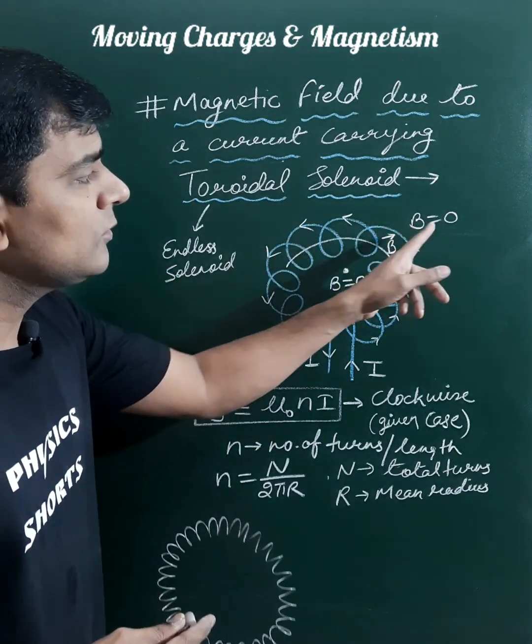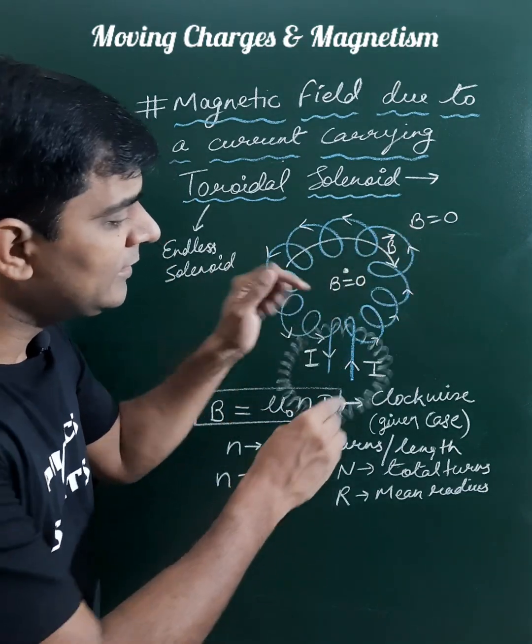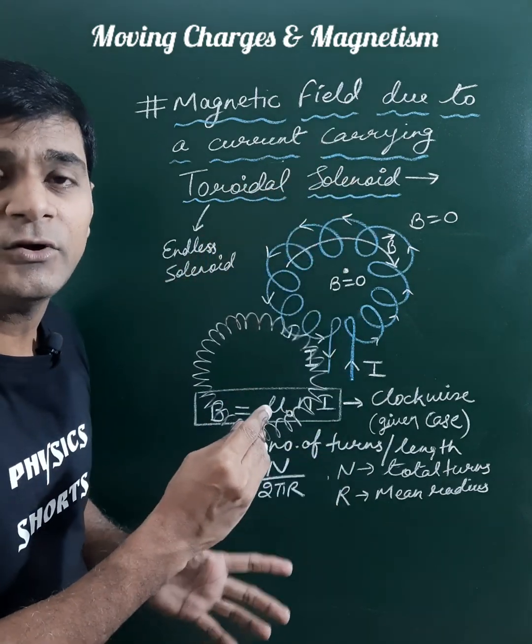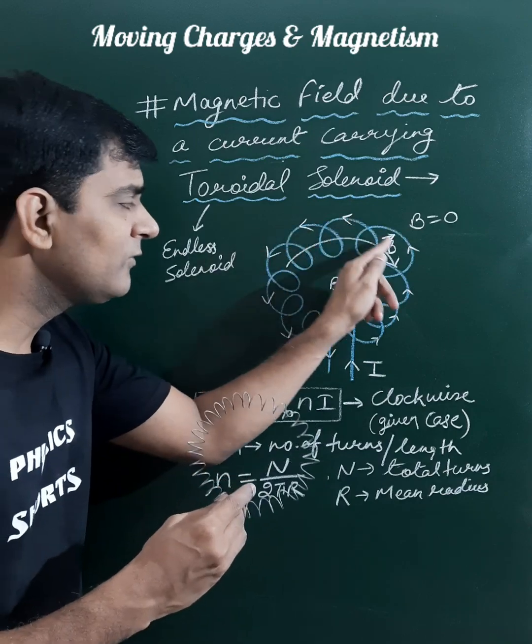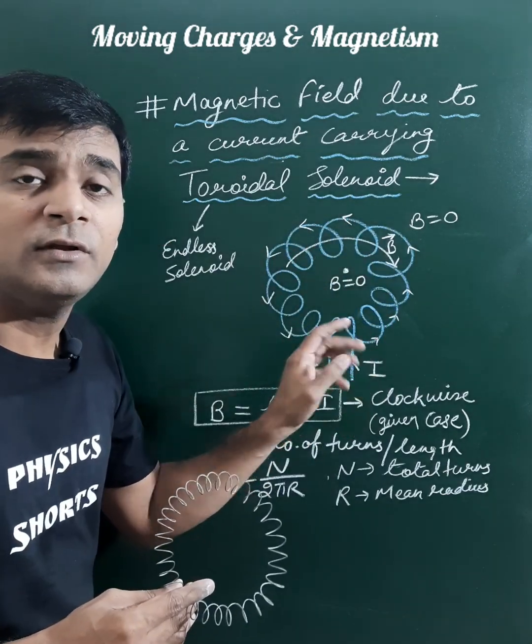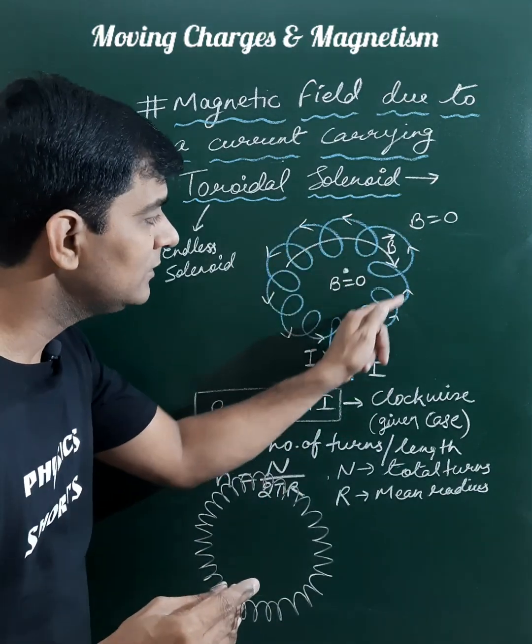Outside the solenoid in the exterior and interior region, or where the space or air is present, the magnetic field will be zero. The uniform magnetic field is only present inside the toroidal solenoid.